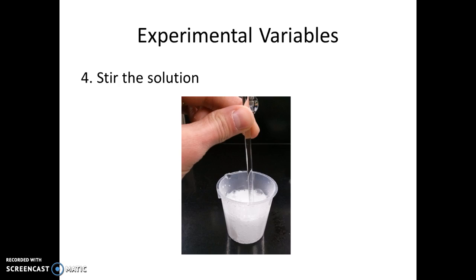Another potential variable is stirring the solution. You can get a glass stir rod from the drawers at your lab station. One thing to be careful about: while stirring, it can be hard to observe when the Alka-Seltzer is fully dissolved. My suggestion is to stir for a specific amount of time — for example, stir for 10 seconds, then stop and wait to see when the Alka-Seltzer is fully dissolved, rather than stirring the whole time.